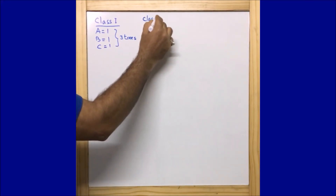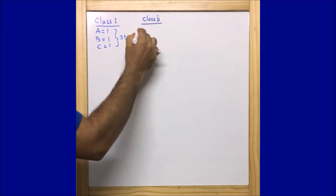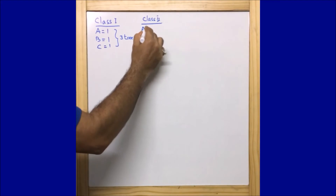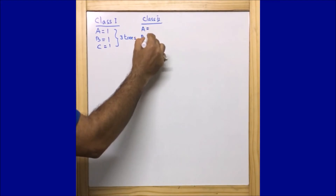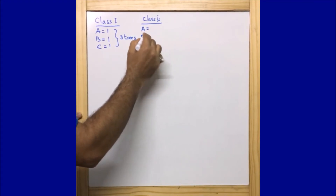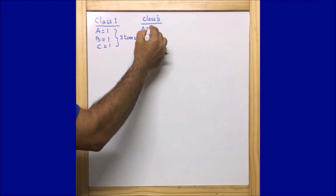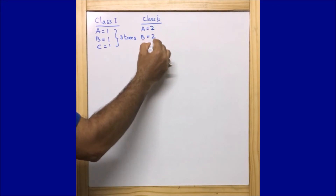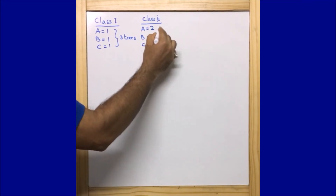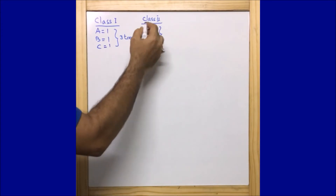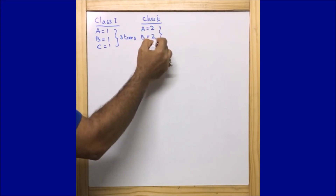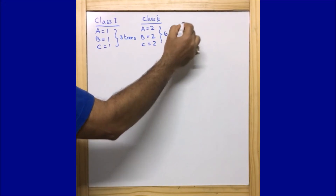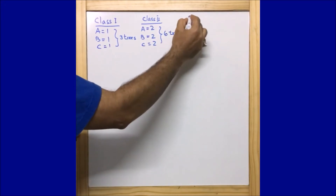Similarly, for Class 2, sections A, B, and C each plant two trees — because as per the question, the number of trees equals the class number — so altogether Class 2 plants six trees.